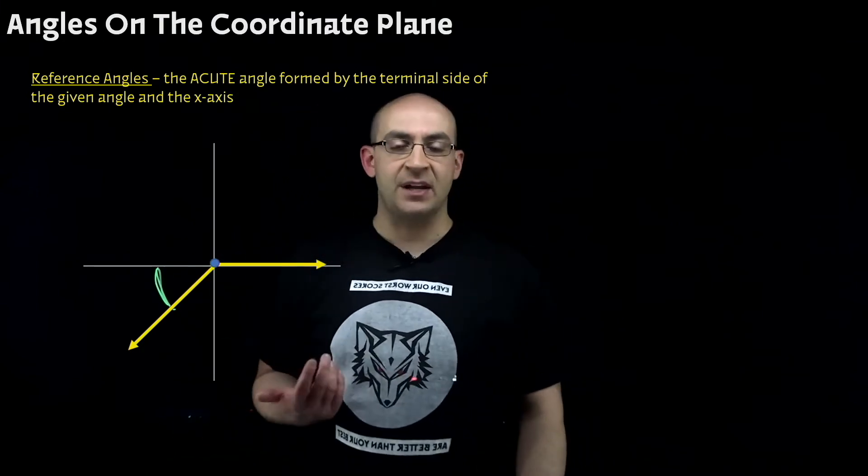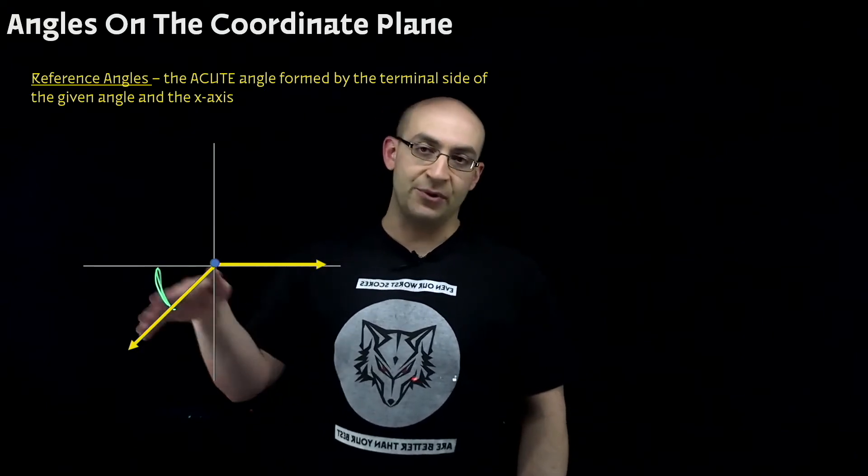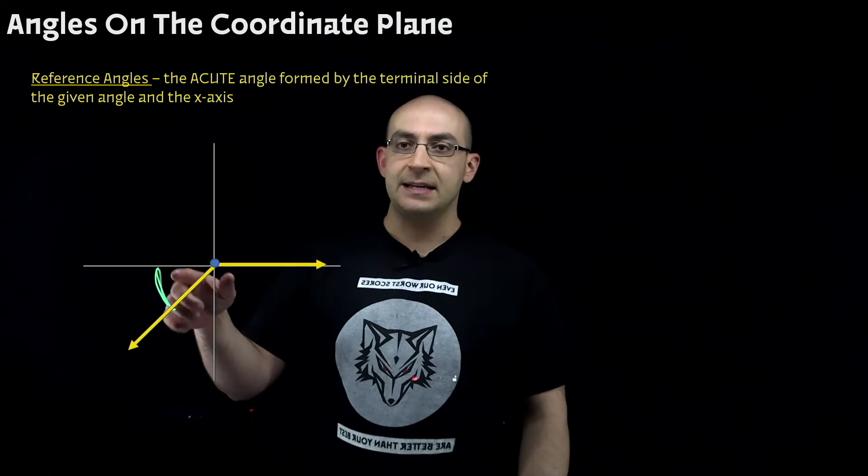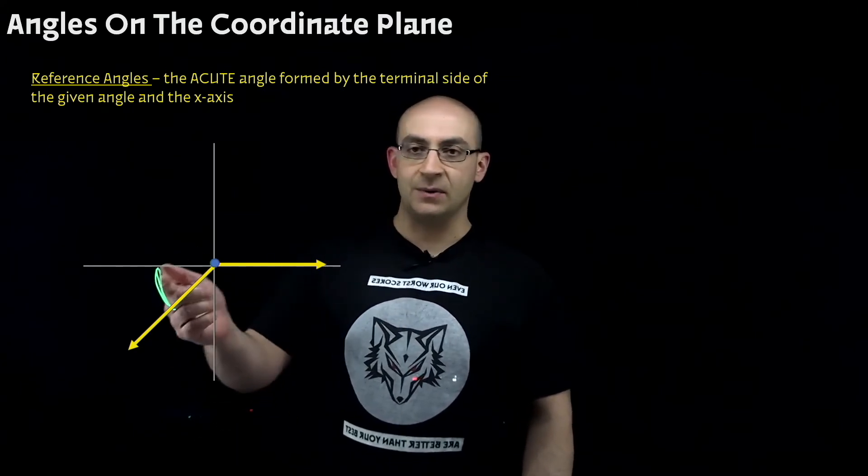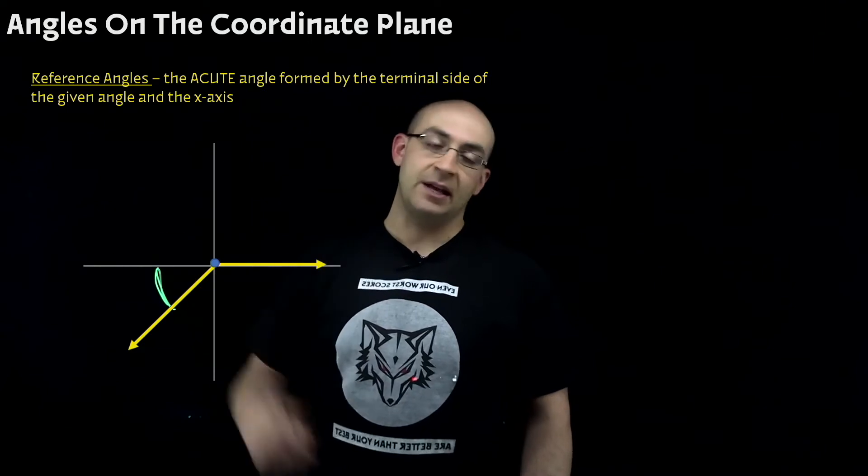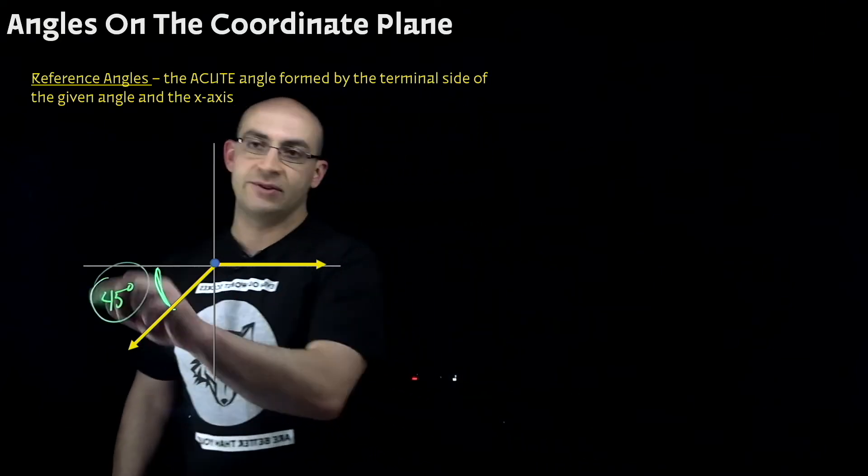Now again, we've been using the same angle measurement for the majority of these problems. Let's say this is that 135 type angle. Always reference angles will be positive. So if this is 135, we know a straight line is 180. So our reference angle here is going to be 45 degrees.